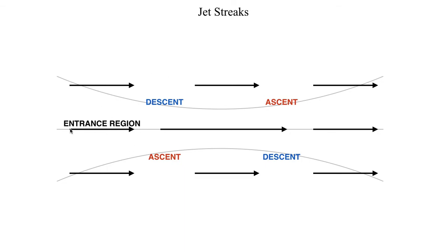In the region where the wind hasn't accelerated yet — before the wind has actually gone through the locally enhanced flow — we refer to that as the entrance region of the jet streak. And in the region where the flow has gone through or has traversed the core of stronger winds, we refer to that as the exit region.